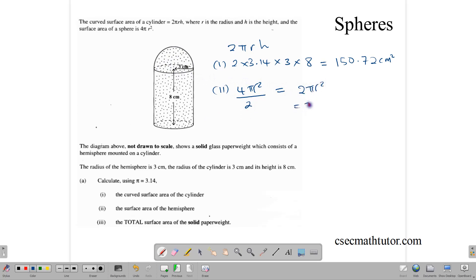Which gives us 2 × 3.14 × the radius squared, which is 3. So it's 3². And punching that into our calculating device gives us 56.52 cm².